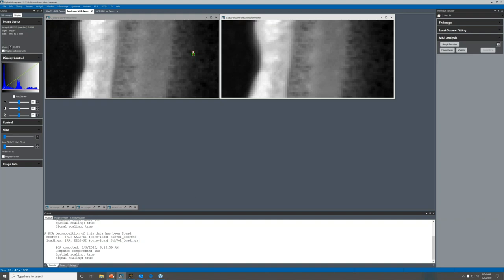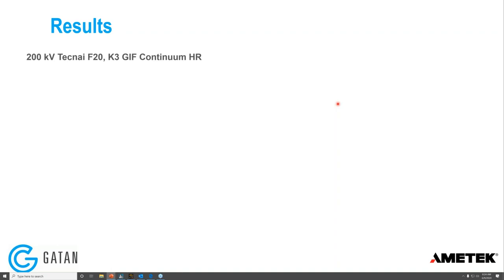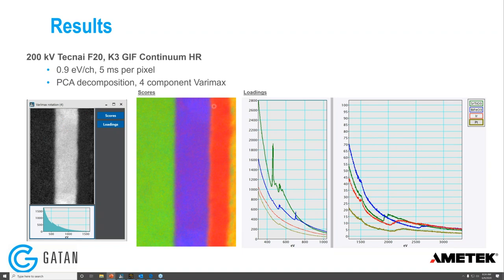So let's go back to the webinar. There were actually two examples there instead of one. The compiled results from the K3 data: that data was taken on a Tecnai F20 in Pleasanton at 200 kV, 0.9 eV per channel dispersion, and 5 ms per pixel. We did a PCA decomposition and a four-component VaryMax. This is a color mix of the four components: green is strontium titanate, blue is bismuth ferrite, red is iridium, and yellow is platinum. You can overlay the scores in a color mix, and pull out the loadings as a waterfall plot.